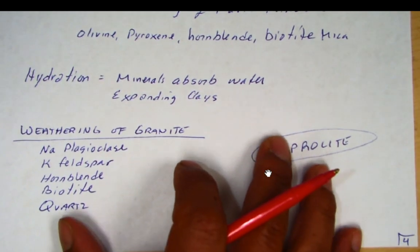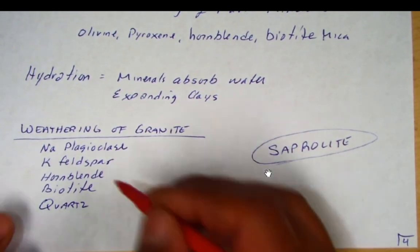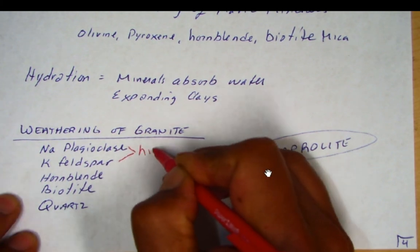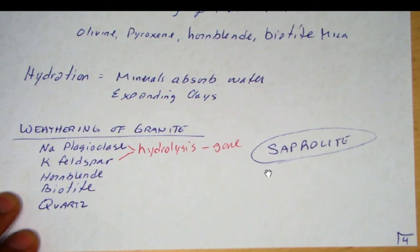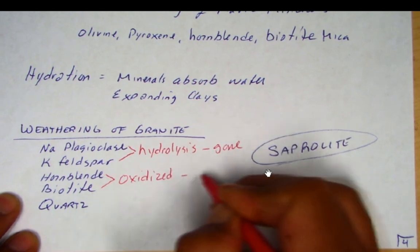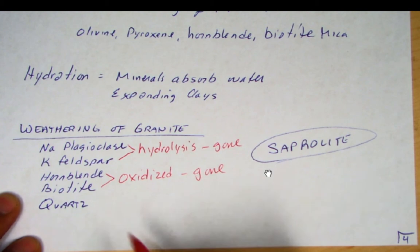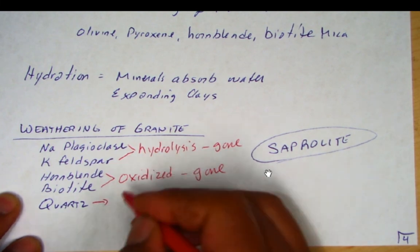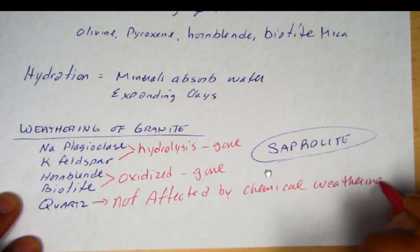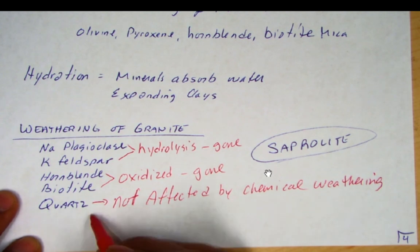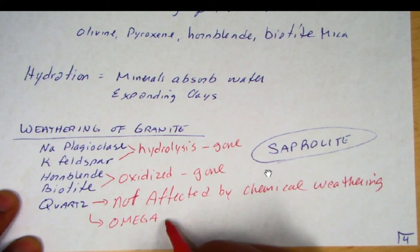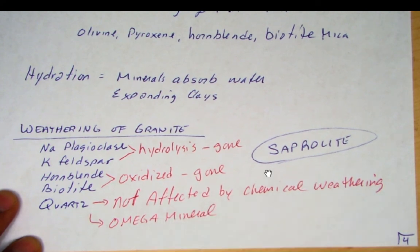What happens to granite when it's weathering? The feldspars experience hydrolysis — so basically they're gone, chemically weathered away. The hornblende and biotite mica in a granite will be oxidized — so they're gone too over time. Quartz, however, is not affected. Quartz is an unusual mineral — it's not oxidized and it's not hydrolyzed. I usually call it the omega mineral because it survives these chemical weathering systems.